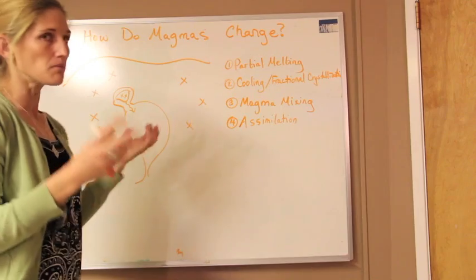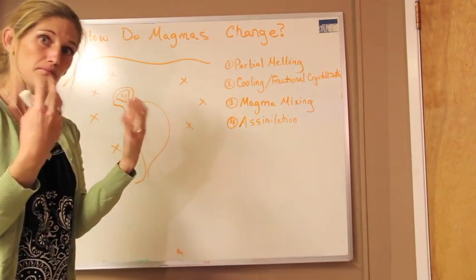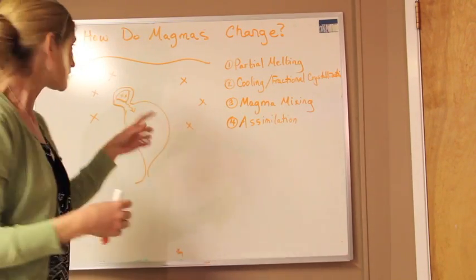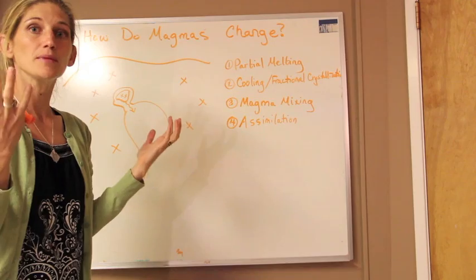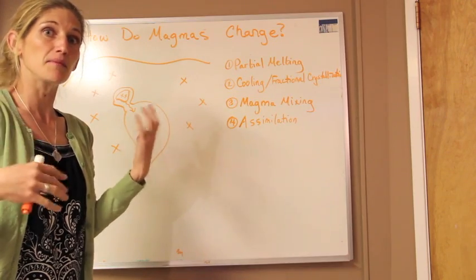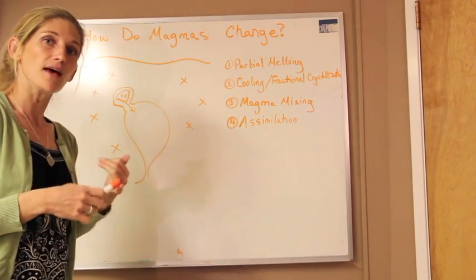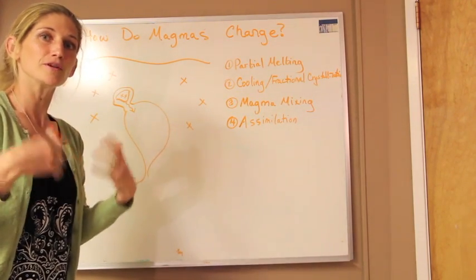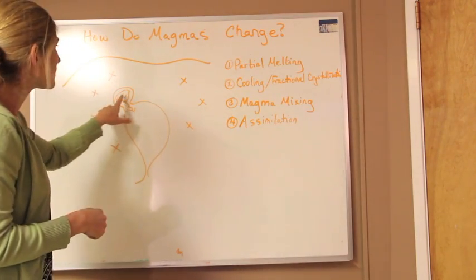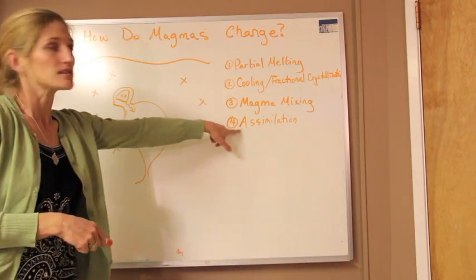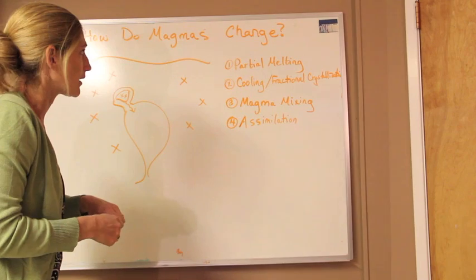What's going to start to happen is it's going to assimilate that piece of country rock, that surrounding cool rock. It's going to melt it and take that material — all of those chemicals inside of that rock — and those are going to become melted down and become part of the magma. This actually works to make that magma more and more felsic over time. This is the process of assimilation of the surrounding country rock.